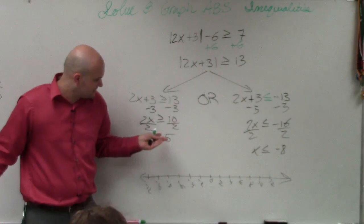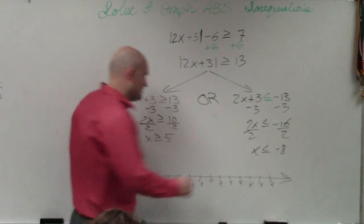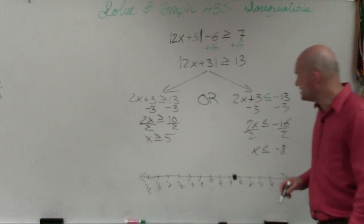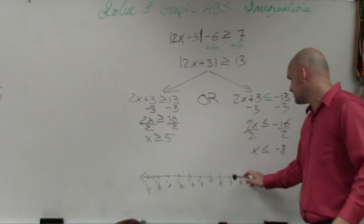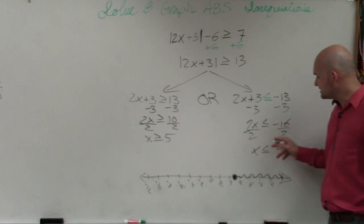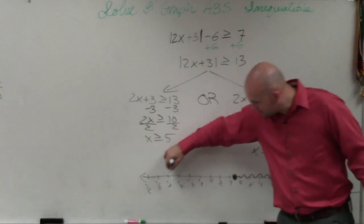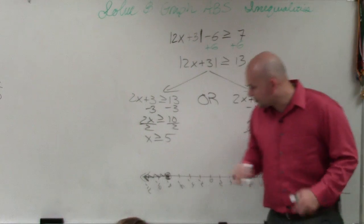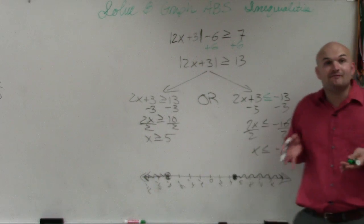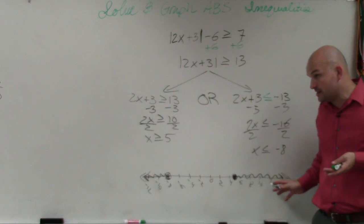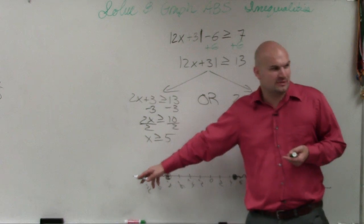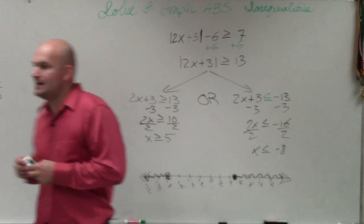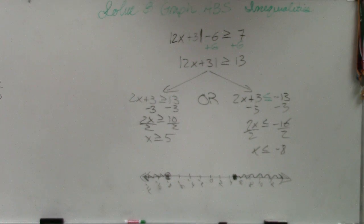So this is x is greater than or equal to 5. So that's going to be a solid, closed point at 5, between 4 and 6. It's greater than, so it's going to be all the points going to the right. And then x is less than or equal to negative 8 is going to be over here. And all the values that are less than that are going that way. So you have a solution when it's true for this one or true for that one. Can it be true for both? No, not in this case. Because it would have to be on both of the graphs.